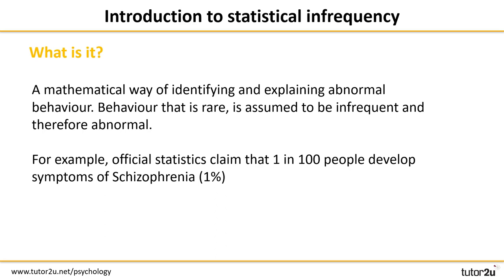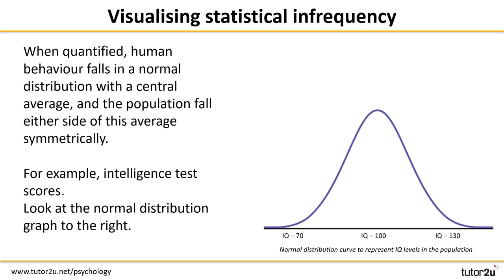Here is an example that will help to illustrate what we mean by rare. Official statistics claim that one in 100 people develop schizophrenia, which equates to just one percent of the population. This mental health condition does not affect masses of the population — it is rare — and so this definition concludes that schizophrenia is therefore abnormal.